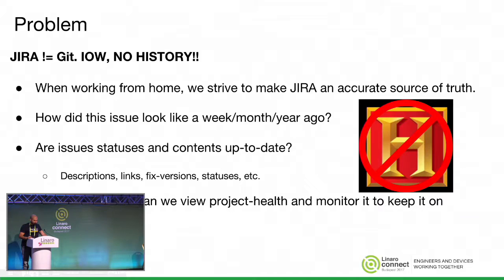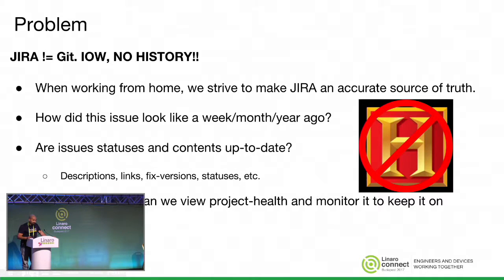The problem is that if we wanted to collect some metrics from Jira so it can be used by managers, directors, and team leads to view the health of the project — especially when working from home — we need at least one source of truth that is accurate, which is Jira. But Jira doesn't let you look at the status of an issue from a week, month, or year ago out of the box. So we had to find a way to script or plug in a custom-developed solution to get that done.